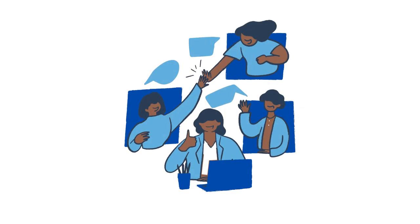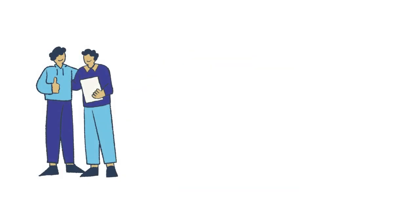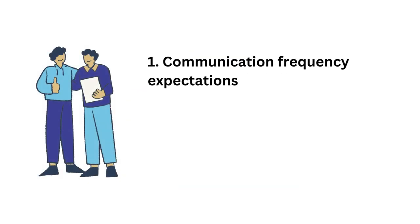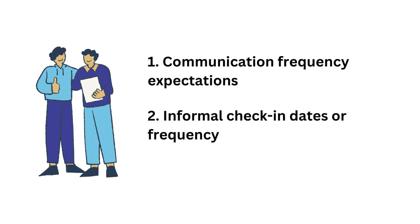Communication. Communication is a crucial aspect of group work, but it can be kind of tricky. It is vital in keeping a good work dynamic and it is important in moments of conflict. A good level of communication looks different for each group, but it can help to outline communication frequency expectations, informal check-in dates or frequency, and meeting times — on a regular basis or as a more formal version of a check-in.